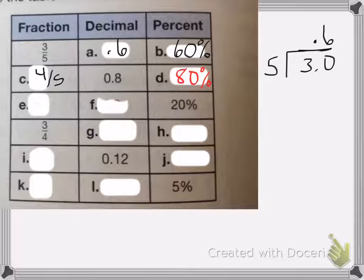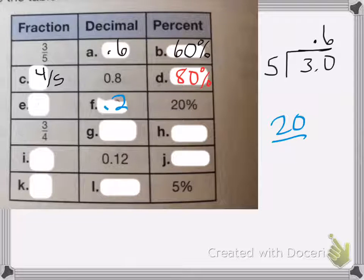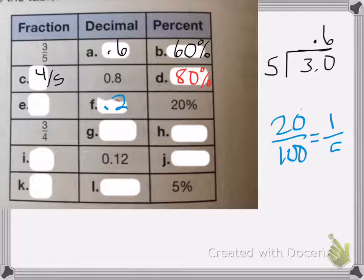On the next one, I'm given 20%. That means the decimal is going to be 0.2. Okay, because it's in the, or 0.20, but we need to erase that zero anyway. And then E is going to be 20 over 100, which reduces down to 1 fifth.